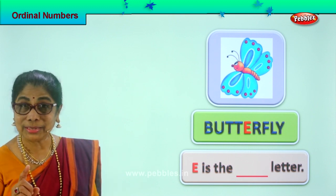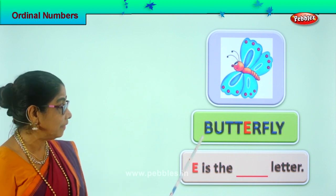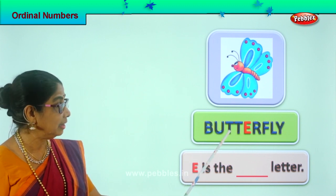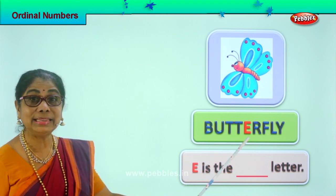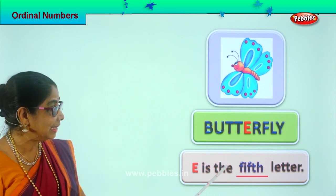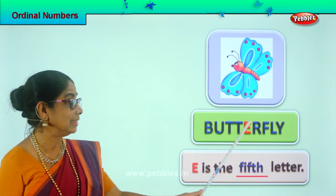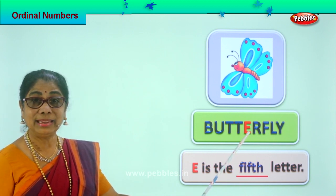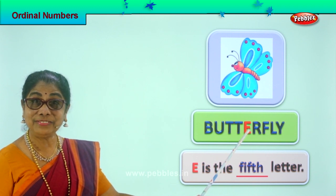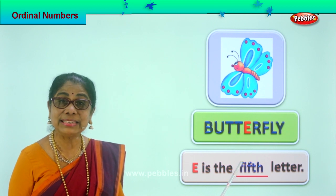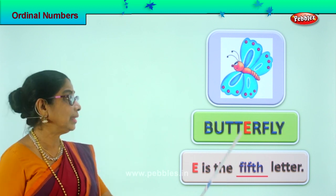Now let's see what is the ordinal position. First, second, third, fourth — letter E is in the fifth position. Excellent! E is the fifth letter. Spell fifth: F-I-F-T-H. Fifth. Letter E is colored and that's the fifth letter.